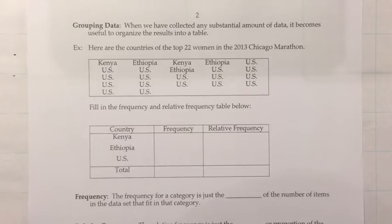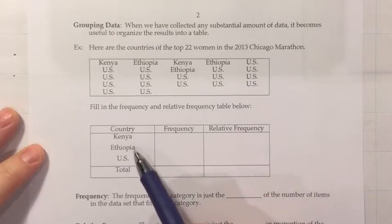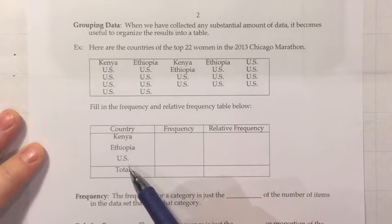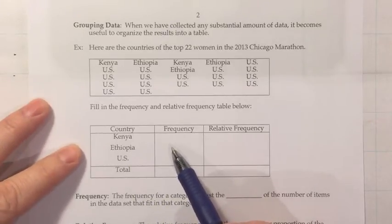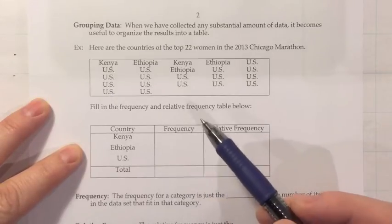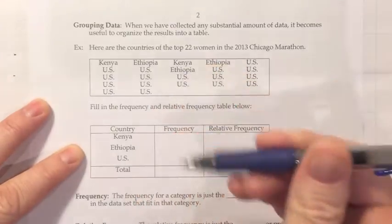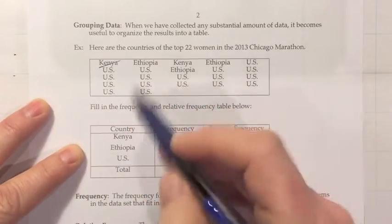Here are the countries of the top 22 women in the 2013 Chicago Marathon, and we want to make a frequency and relative frequency table by country of origin. They've listed Kenya, Ethiopia, and the US. For frequency, you're just going to count how many times something appears. It's good to cross them off as you go through, to make sure you've addressed every piece of data.